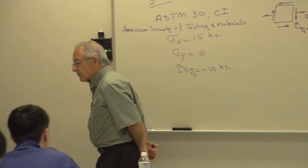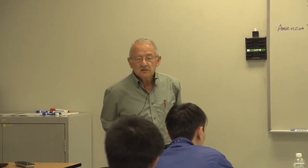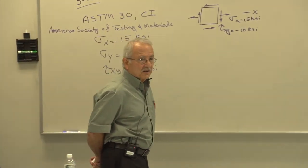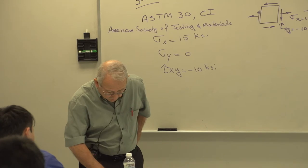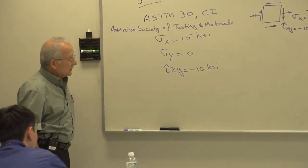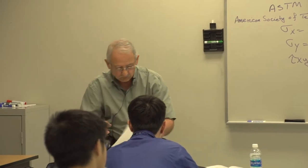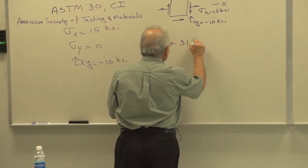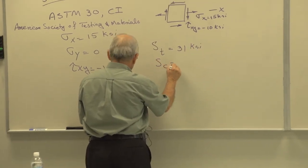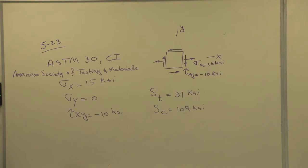The number 30 gives you the approximate tensile strength of the cast iron. When you read ASTM 20, the tensile strength is approximately 20 KSI; ASTM 30 means it's approximately 30 KSI. From the tables in the back of the book, you get ST equals 31 KSI and SC equals 109 KSI — the tensile and compressive strength of cast iron. You see that ST is approximately 30 KSI.